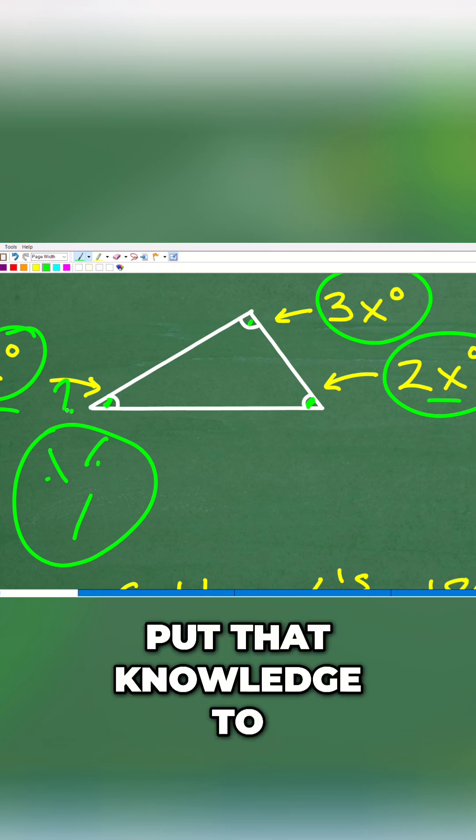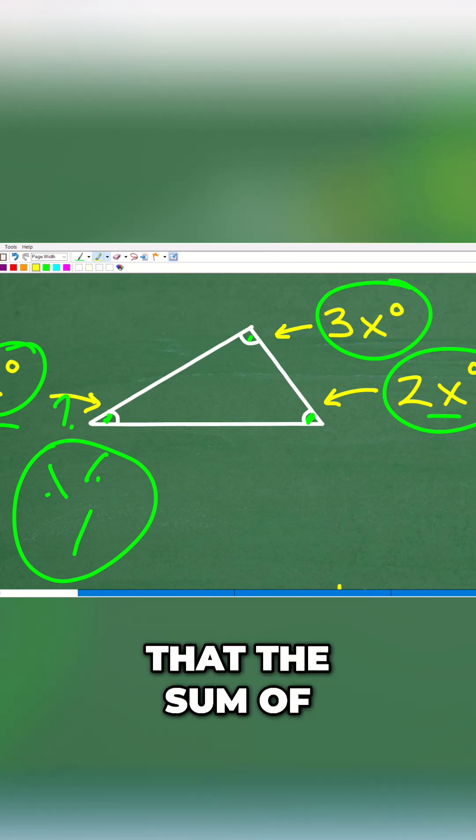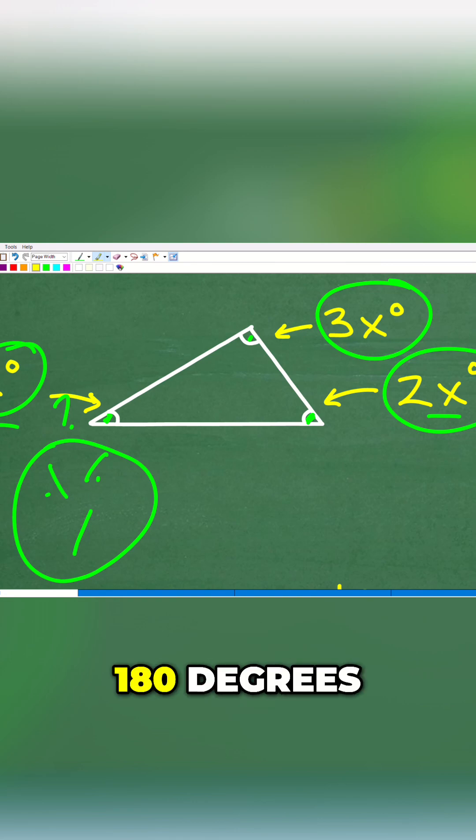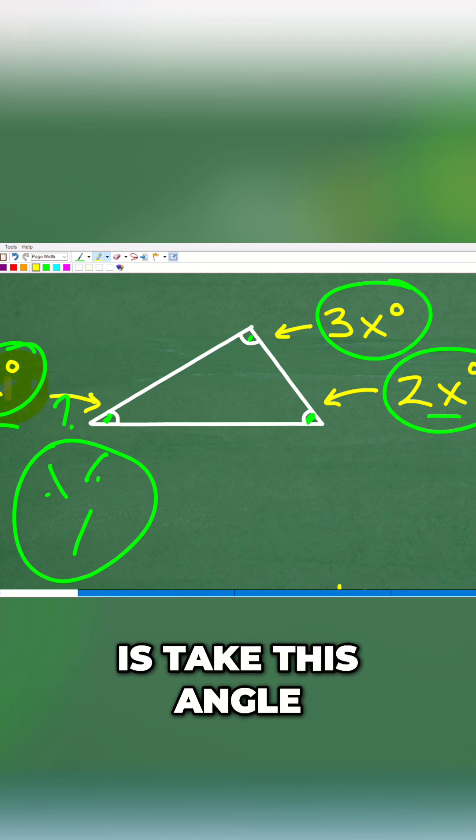We'll put that knowledge to work. If you forgot that the sum of the angles of a triangle equal 180 degrees, all we have to do here is take this angle plus this angle plus this angle and have that equal to 180 degrees.